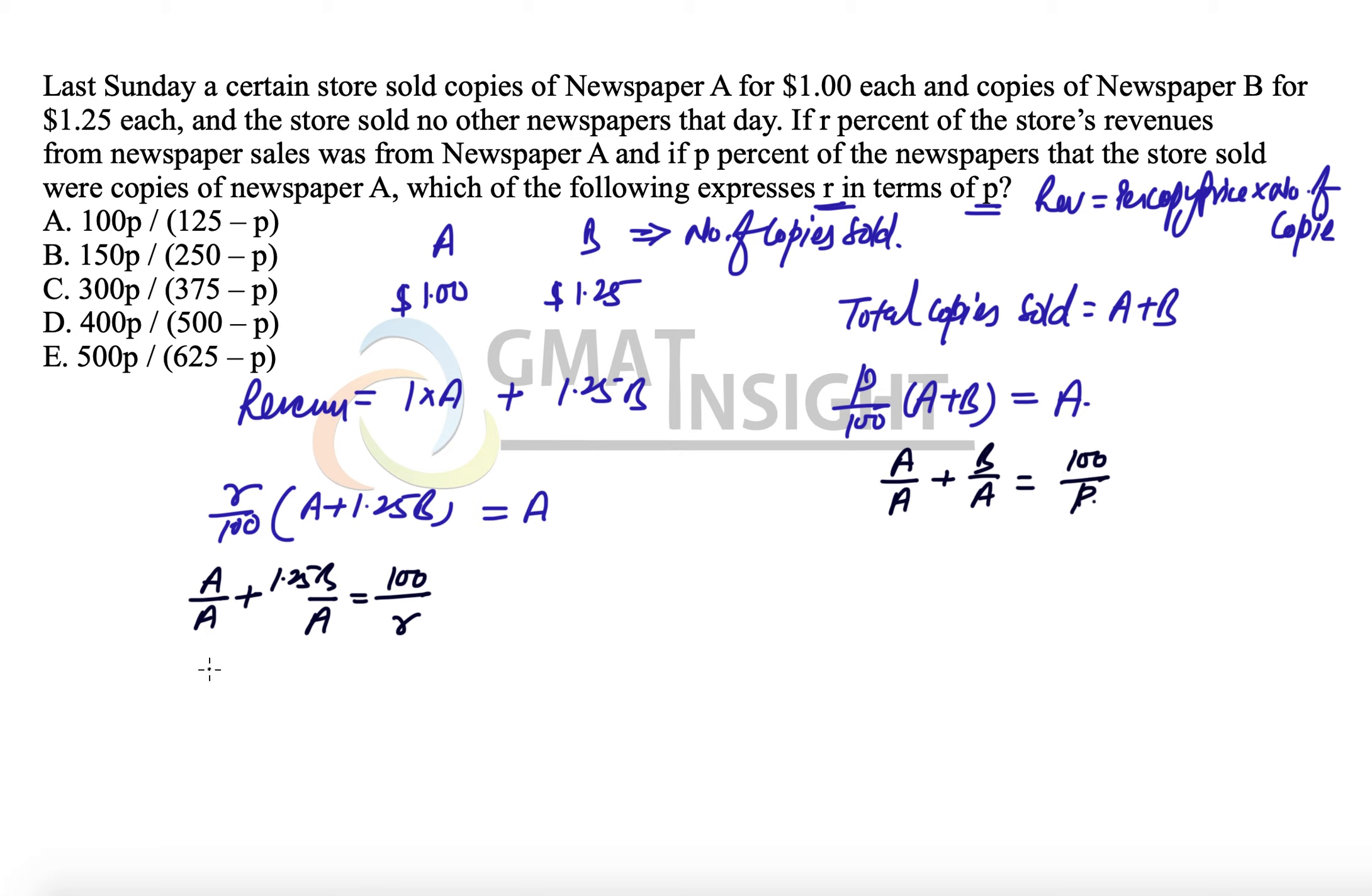Now we need to simplify them. This equation becomes 1 plus 1.25, which can be written as 5 over 4, so 5 over 4 times B over A equals 100 over R. This equation becomes 1 plus B over A equals 100 over P. We can find B over A from here, which equals 100 over P minus 1. I'm going to substitute the value of B over A from this equation into the other one.